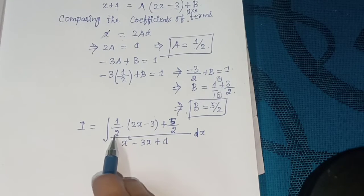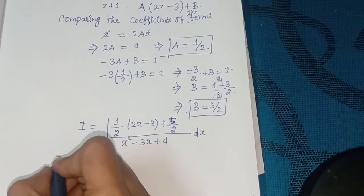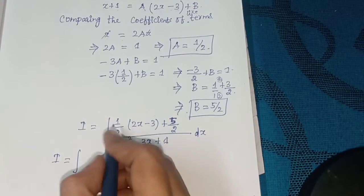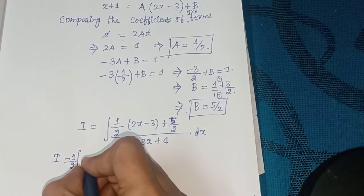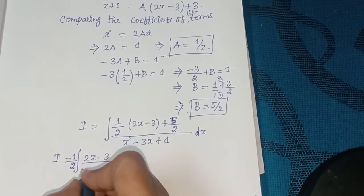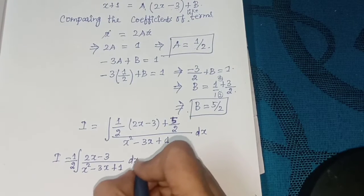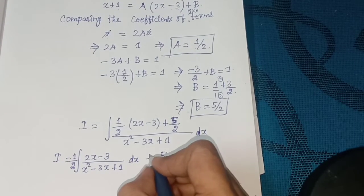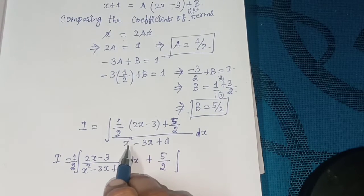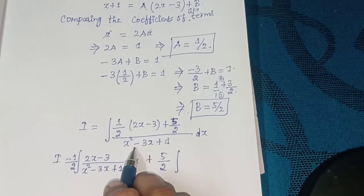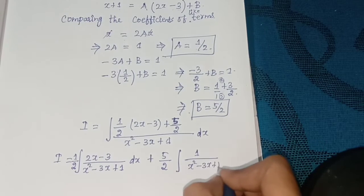Splitting into two separate integrals: i = (1/2) integral of (2x - 3) divided by (x² - 3x + 1) dx plus (5/2) integral of 1 divided by (x² - 3x + 1) dx.